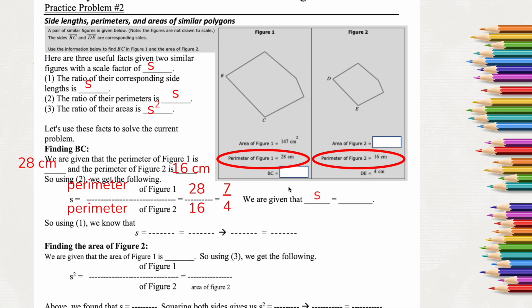So now we're given that S is 7 fourths. So we're kind of given that. We had to calculate it, but they gave us enough so that we could find the scale factor. So now we're going to use number 1 because number 1 is about finding the length, so we're going to focus on finding BC first.